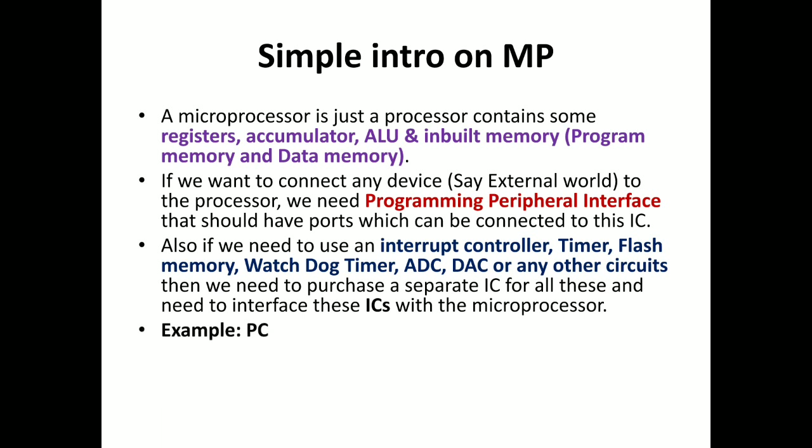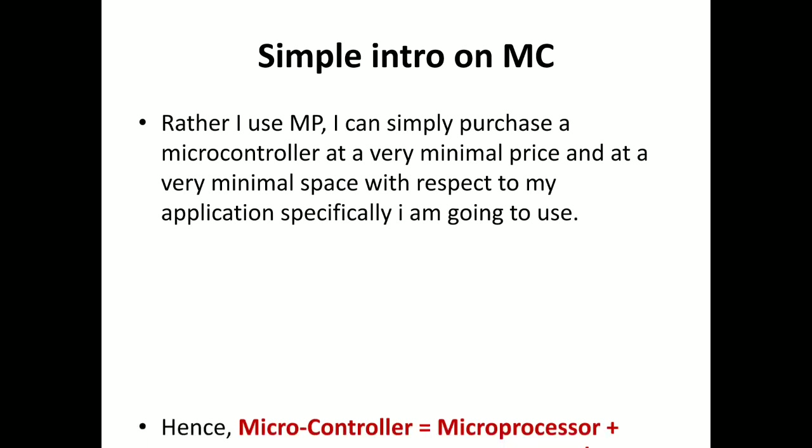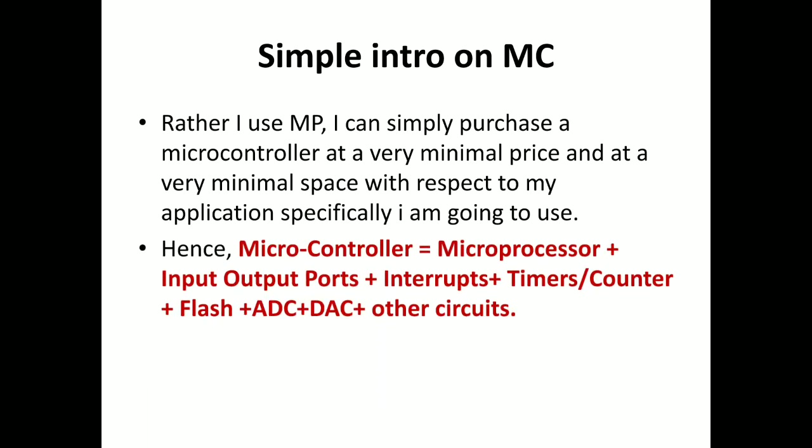A very simple and easily understandable example for a microprocessor is a personal computer. In a PC you can do gaming, watch movies, listen to music, edit photos and videos, and run any application. Whereas a microcontroller is used for only specific operations — for example, a vending machine, washing machine, or microwave oven.